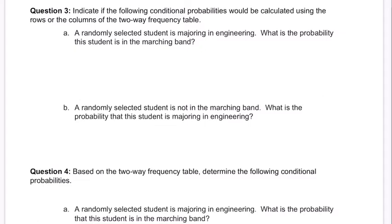So often in probability, especially with two-way tables, you're going to encounter what are called conditional probabilities. There's going to be some condition, and what that usually means, at least in a two-way table, is that you're going to be restricted to a row or a column.